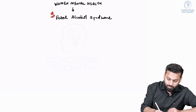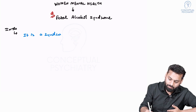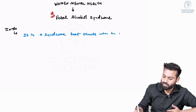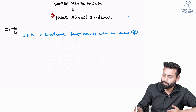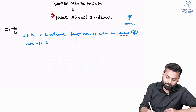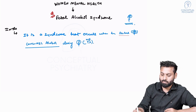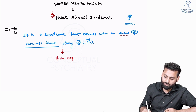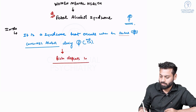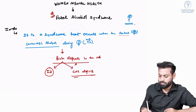Fetal alcohol syndrome is a syndrome that occurs when the mother — that is, the pregnant female — consumes alcohol during pregnancy, especially in trimester one. This leads to certain birth defects in the newborn. There could be intellectual disability and CNS deficits that we will be seeing.